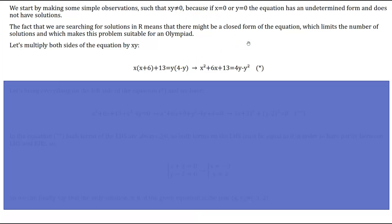After this observation, we continue reasoning toward the solution. The fact that we are searching for solutions in the set of real numbers means there might be a closed form of the equation which limits the number of solutions and makes this problem suitable for an olympiad. Let's multiply both sides of our given equation by xy and we get x(x+6) + 13 = y(4-y).